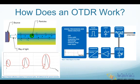When hit, some particles redirect the light in different directions, creating both signal attenuation and backscattering. The second type of reflection is called Fresnel reflection. When the light hits an abrupt change in refractive index — for example, from glass to air at a fiber connector interface — a higher amount of light is reflected back, which can be thousands of times bigger than the Rayleigh backscattering.